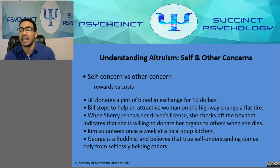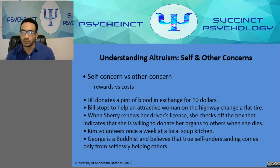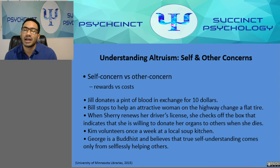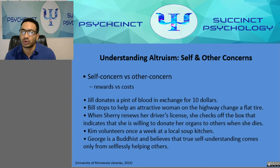Here's a critical thinking exercise: decide whether each of these behaviors is or is not altruistic, considering the role of the person and situation as well as the underlying human motivations of self-concern and other-concern. First: Jill donates a pint of blood in exchange for ten dollars. Second: Bill stops to help an attractive woman on the highway change a flat tire. Third: when Sherry renews her driver's license, she checks off the box indicating she's willing to donate her organs when she dies. Fourth: Kim volunteers once a week at a local soup kitchen.